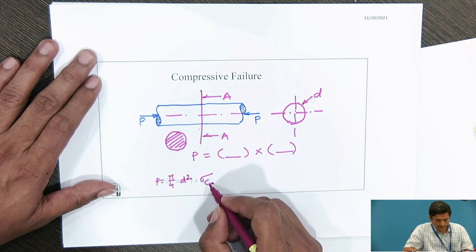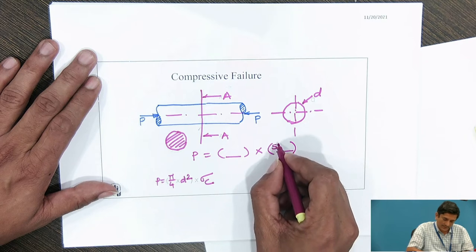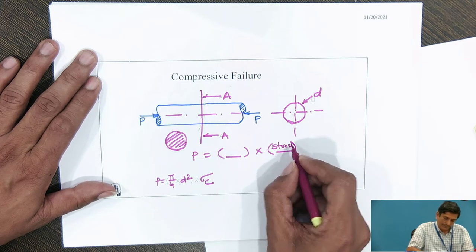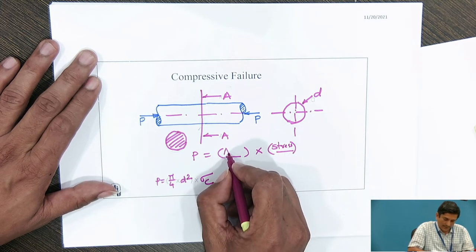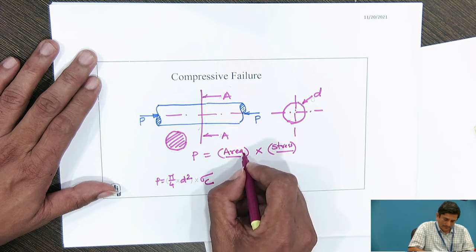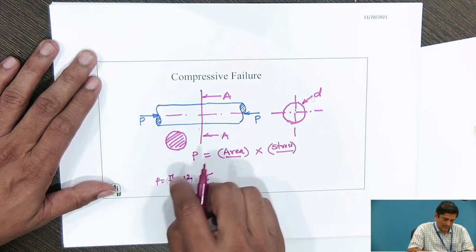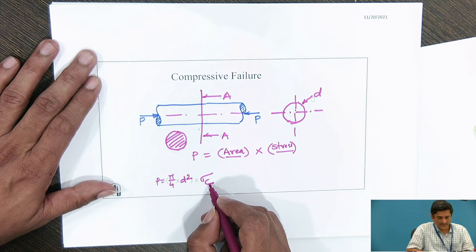Therefore, the corresponding stress, this is the area. Area is pi by 4 D square and the stress is sigma C.